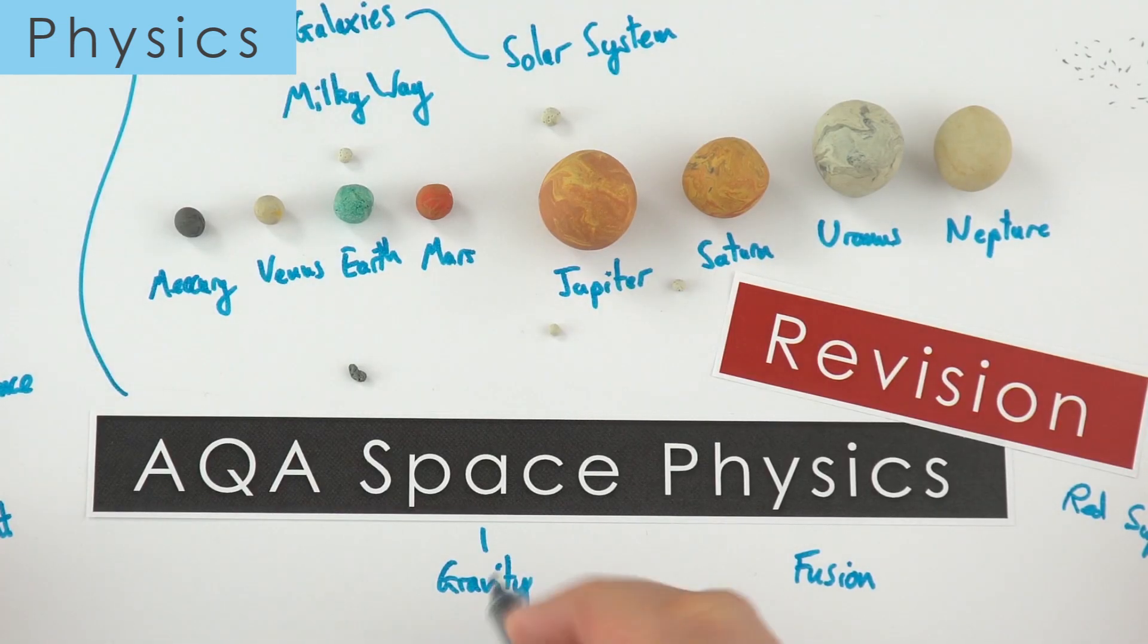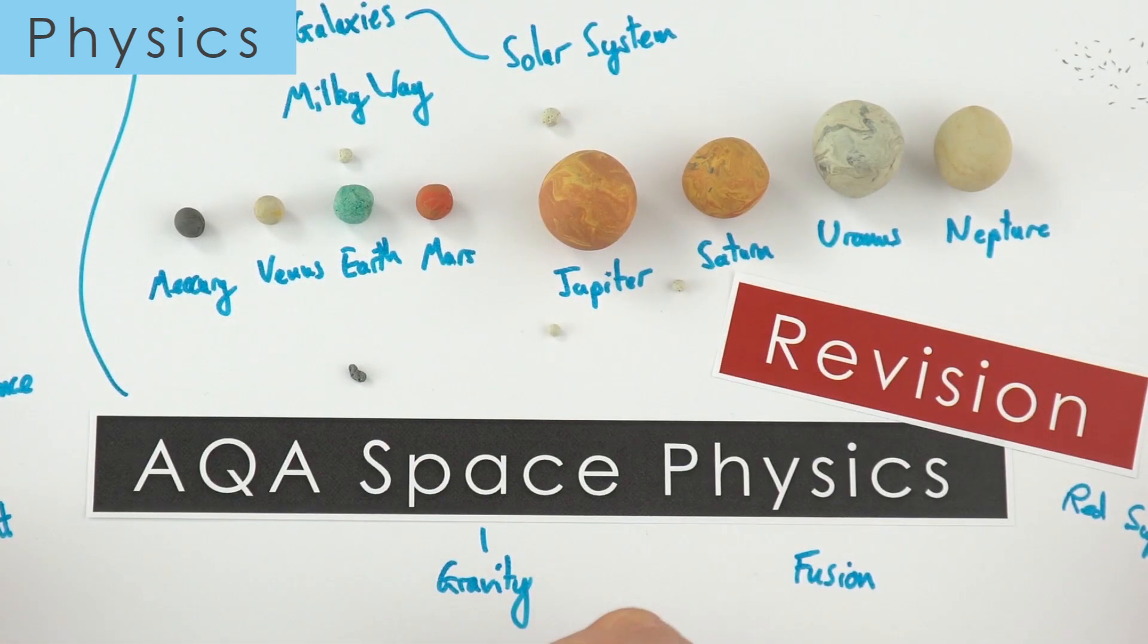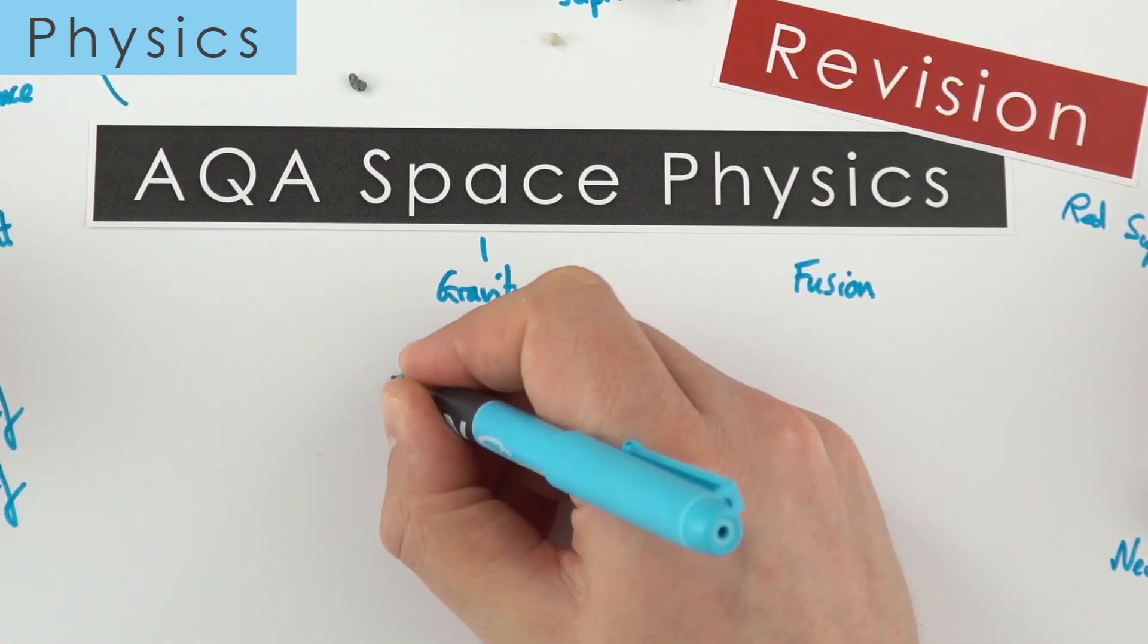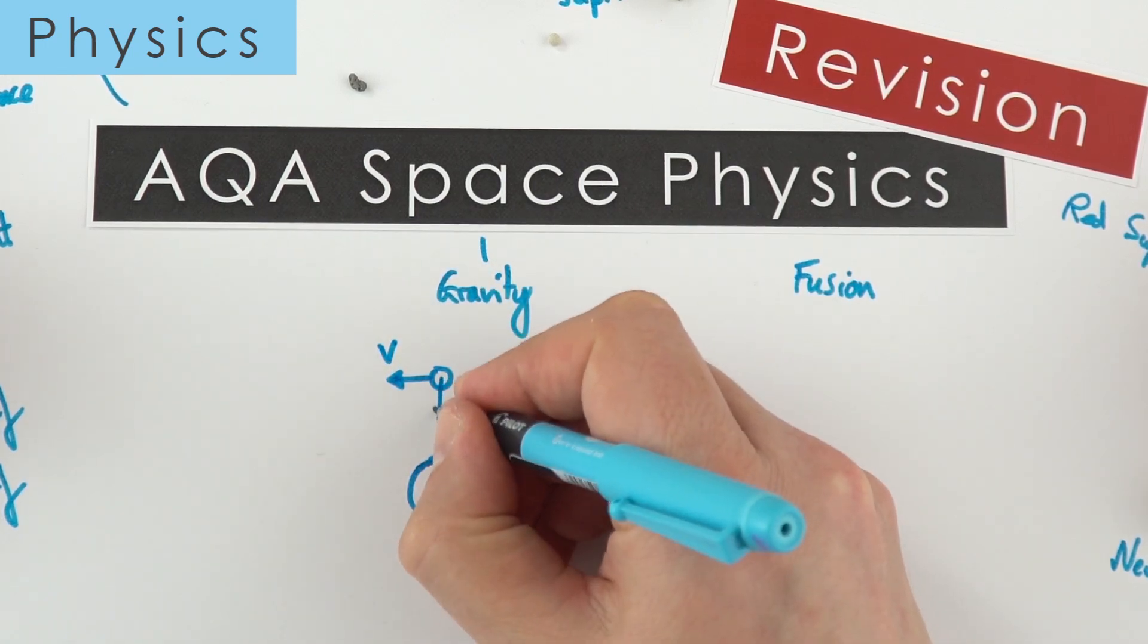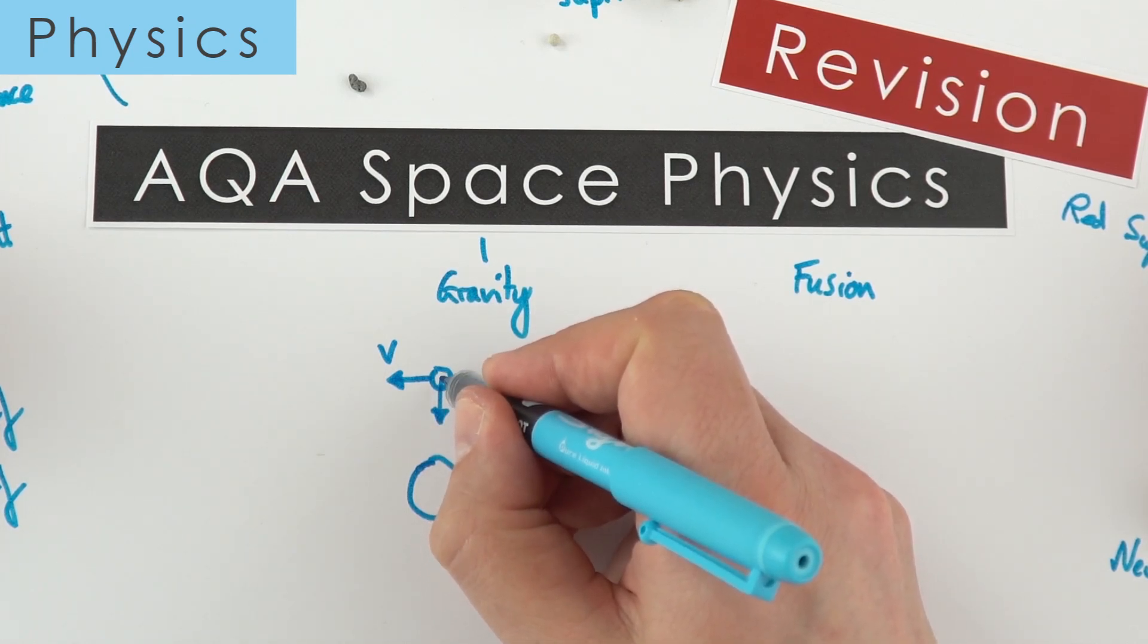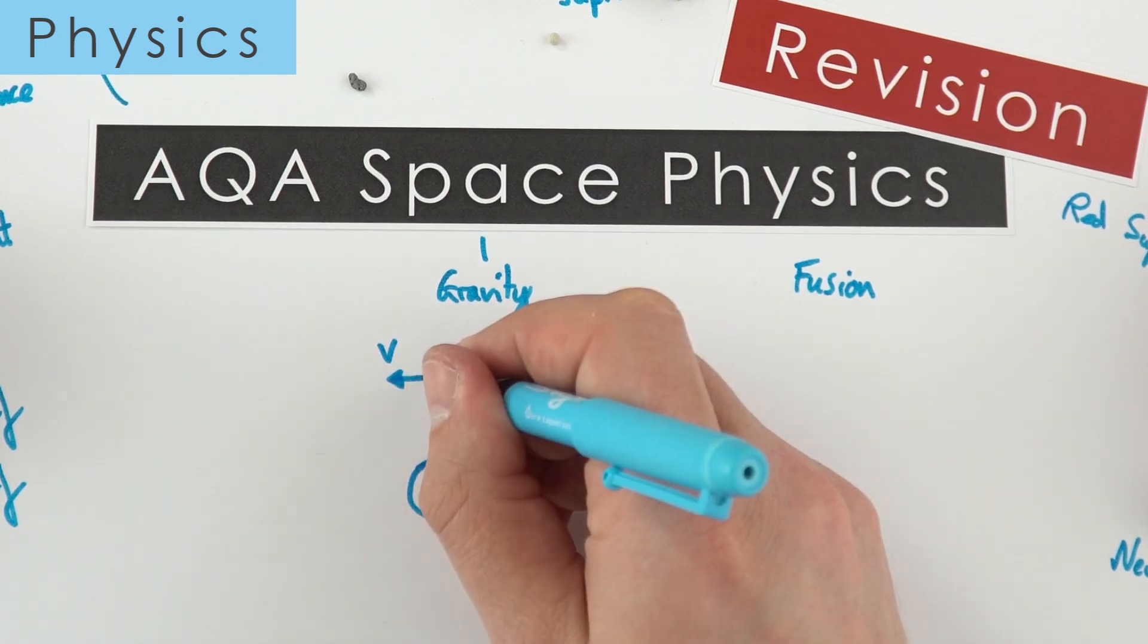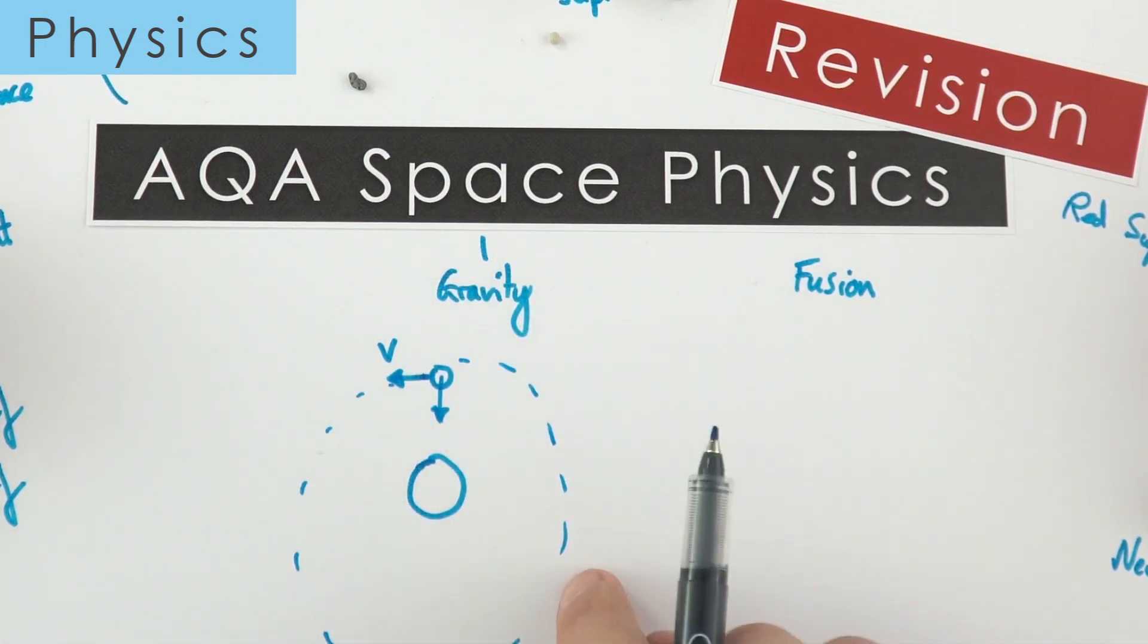Now the other thing that gravity does is it allows all of these planets and all of the satellites to remain in orbit. Because if you have maybe a sun here in the middle and you've got the earth which is orbiting around it at a certain speed, there's a force of gravity that's pulling this in. What this gravity is doing is it's a force that isn't changing the speed but it's changing the direction. And this then means that things follow a circular path.